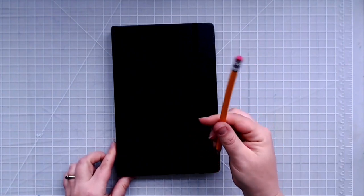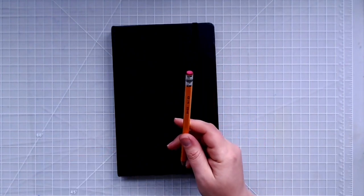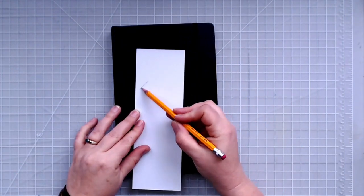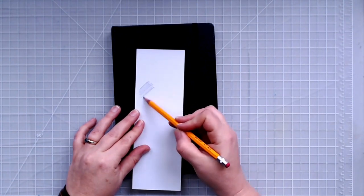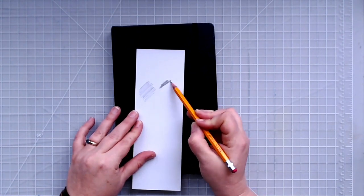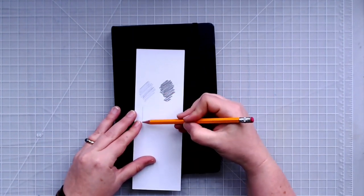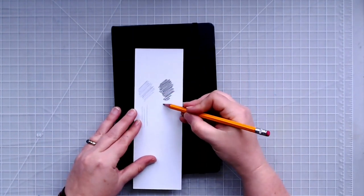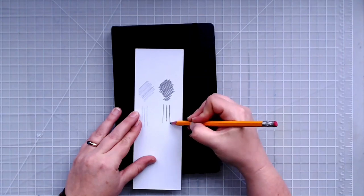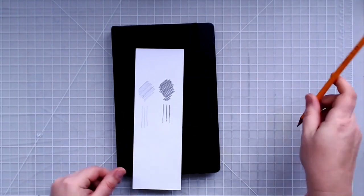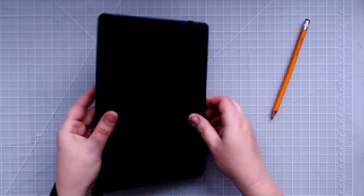The only technique you need to know with this pencil is getting light areas with light pressure and dark areas with heavy pressure. And the same thing for your lines—light lines versus dark lines. And that's it.